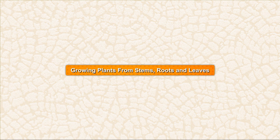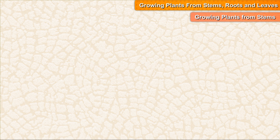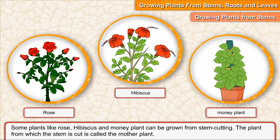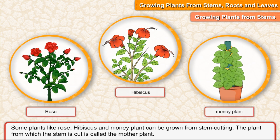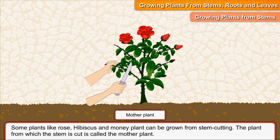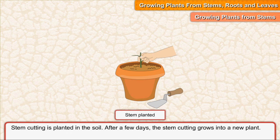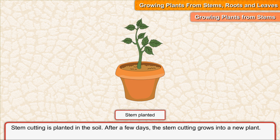Growing plants from stems, roots and leaves. Some plants like rose, hibiscus and money plant can be grown from stem cutting. The plant from which the stem is cut is called the mother plant. Stem cutting is planted in the soil. After a few days, the stem cutting grows into a new plant.